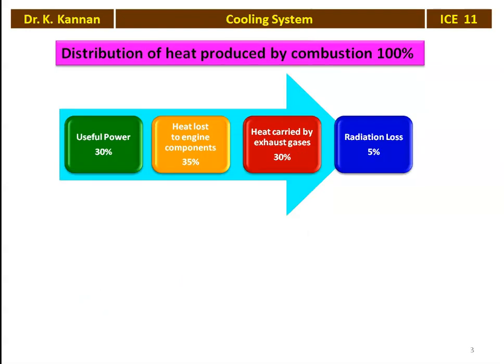Look at the diagram. The heat produced by burning the fuel is taken as 100% — mass of fuel multiplied by calorific value. Of this, 30% is converted into useful work, which is the power available at the crankshaft for external duty. About 35% heat is lost to the engine components, 30% heat is carried away by the exhaust gases, and roughly 5% is radiation loss from the surface of the engine block.